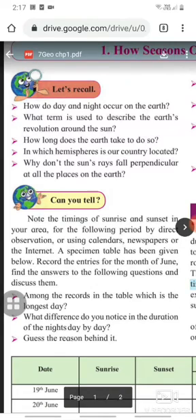The first recall question is: How do day and night occur on Earth? We have studied this earlier. Next is: What term is used to describe the Earth's revolution around the Sun? Another is: How long does the Earth take to do so?